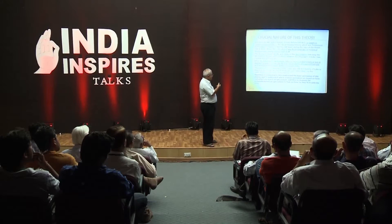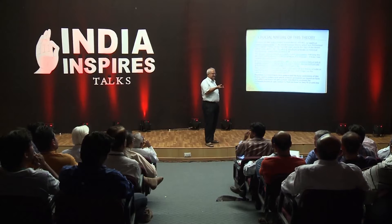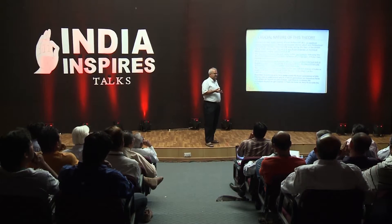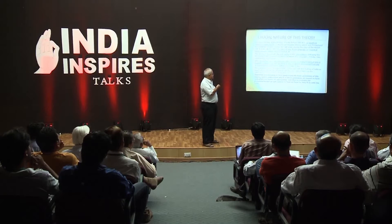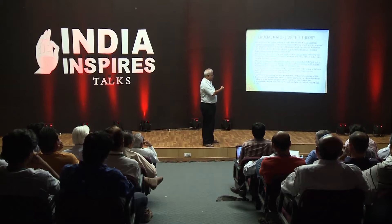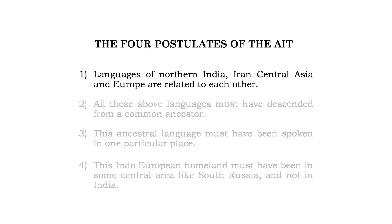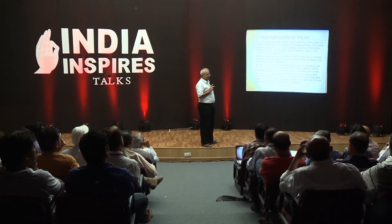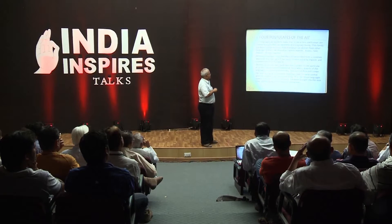It is essential to first understand what this theory is all about. We know that a connection was discovered between North Indian languages and European languages, and they made up this theory. But what exactly are the basic postulates of this theory? There are four basic postulates. The first is that the languages of Northern India, Iran, Central Asia, and Europe are related to each other as members of a language family called Aryan or Indo-European.